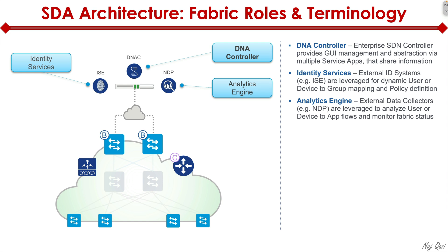Another important component of the SDA fabric is the analytics engine called NDP, which stands for Network Data Platform. It's an analytical engine that collects information via NetFlow, logging, and SNMP — a centralized ingestion point for monitoring and management protocols providing deep visibility into the entire fabric. It also has AI and machine learning built in, making networks intelligent enough to mimic how a network engineer would troubleshoot and monitor the environment.